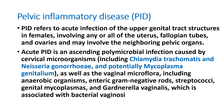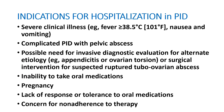Another important sexually transmitted disease is pelvic inflammatory disease (PID) in females. PID is defined as infection of the upper genital tract structures in females, involving the uterus, fallopian tubes, and ovaries, and can also involve neighboring pelvic organs. It is mostly a polymicrobial infection including Chlamydia trachomatis, Neisseria gonorrhoeae, Mycoplasma genitalia, as well as anaerobic organisms, enteric gram-negative rods, streptococci, genital mycoplasma, and Gardnerella vaginalis.